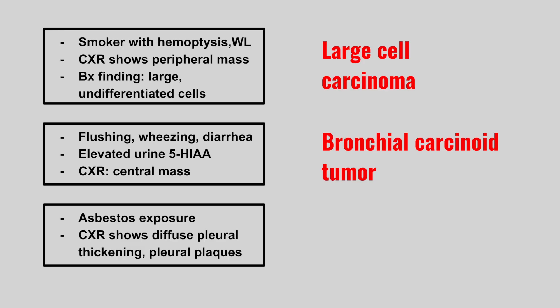Next, we have a patient who has asbestos exposure, and chest x-ray shows diffuse pleural thickening and pleural plaques. This is a mesothelioma.